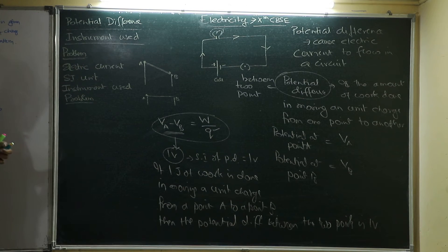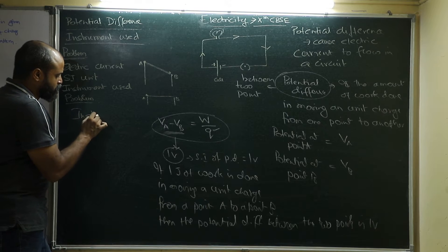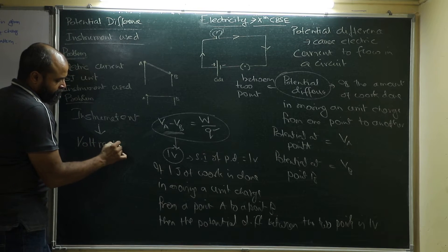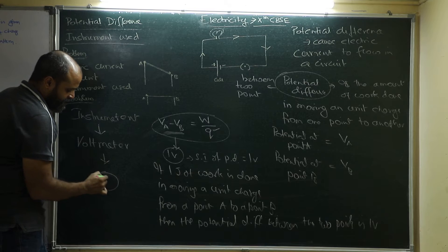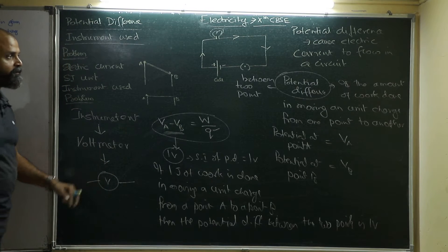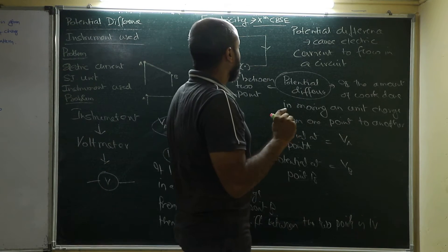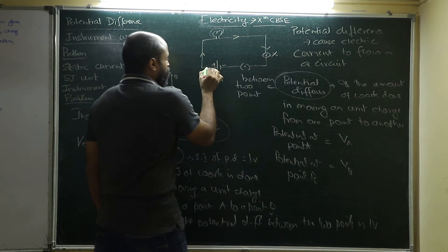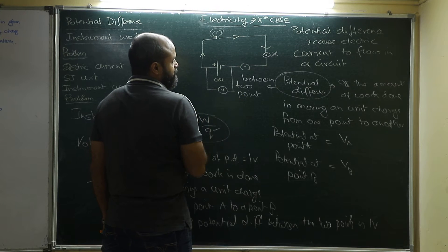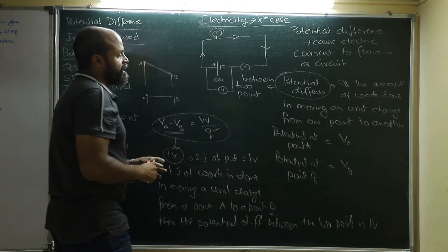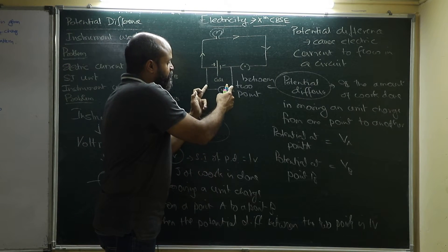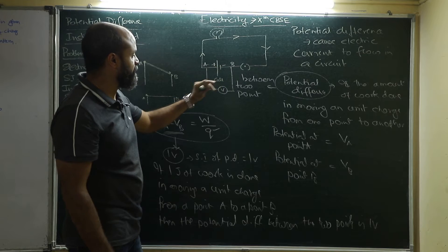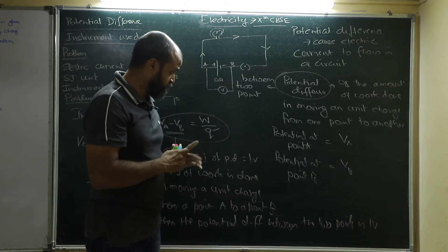The instrument used to measure potential difference is a voltmeter. The potential difference is measured by a voltmeter, which is represented by V in a circuit. We must be very careful: we will never connect a voltmeter in series to a circuit — it will always be connected in parallel. So you will have a separate parallel circuit. In this case, the voltmeter will be measuring the difference of voltage between two points A and B, which are basically the terminals of the battery. A voltmeter must always be connected in parallel.